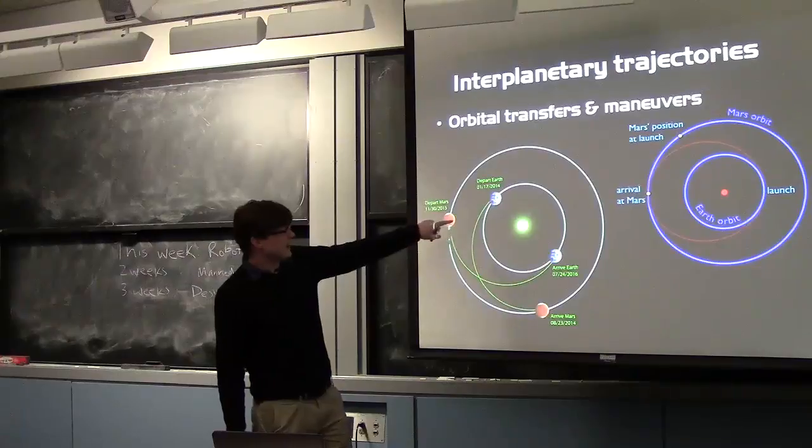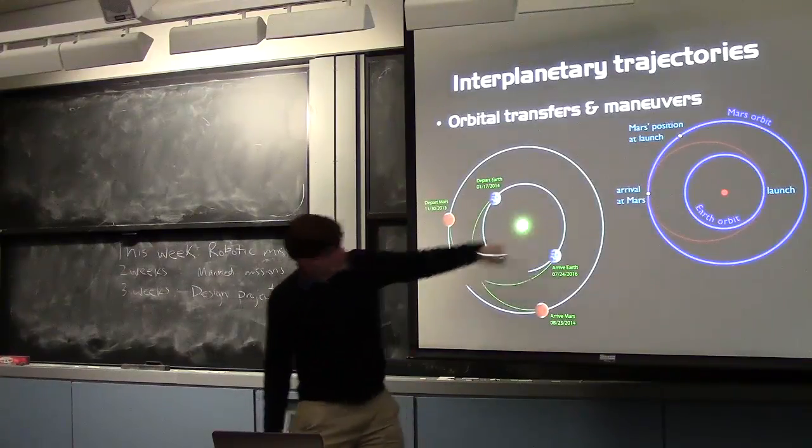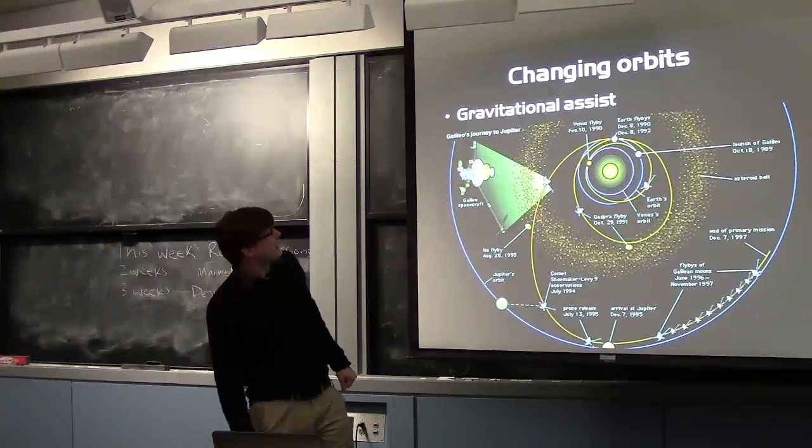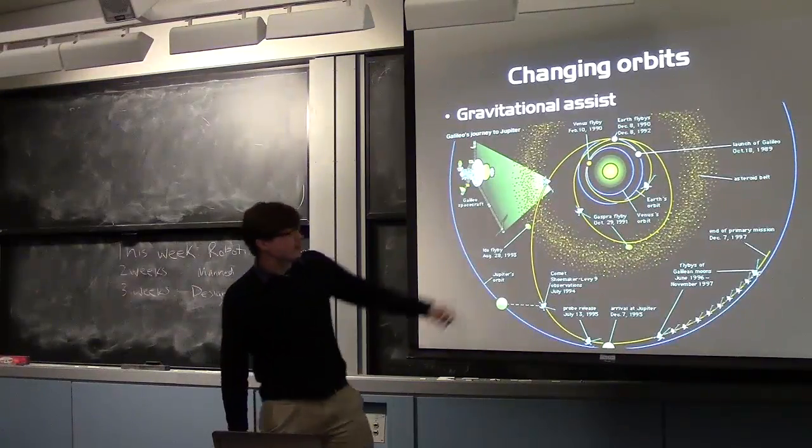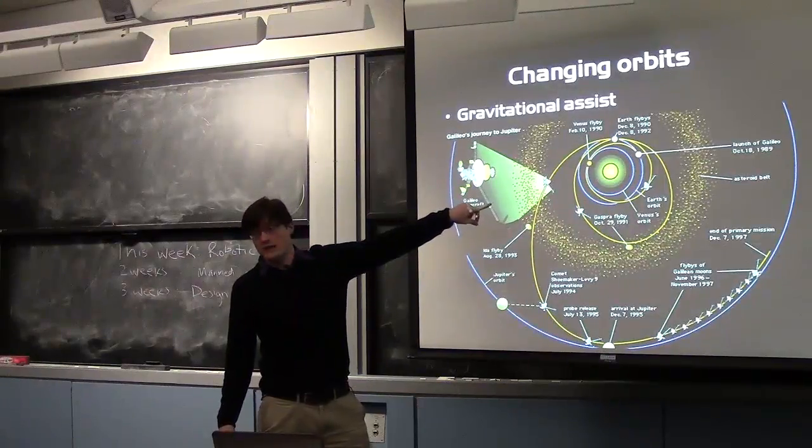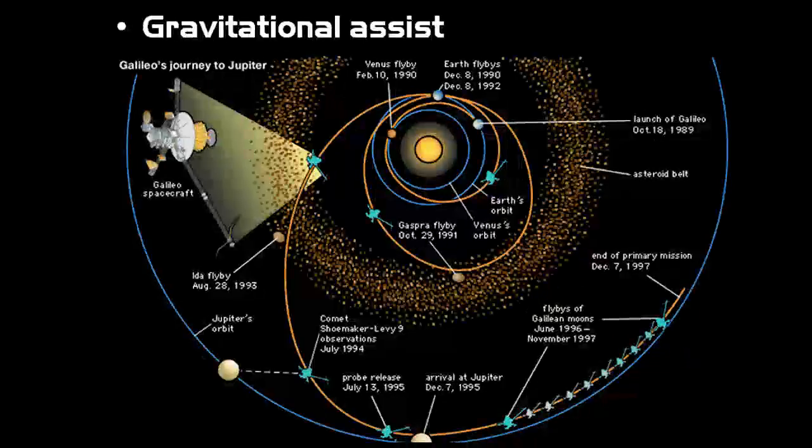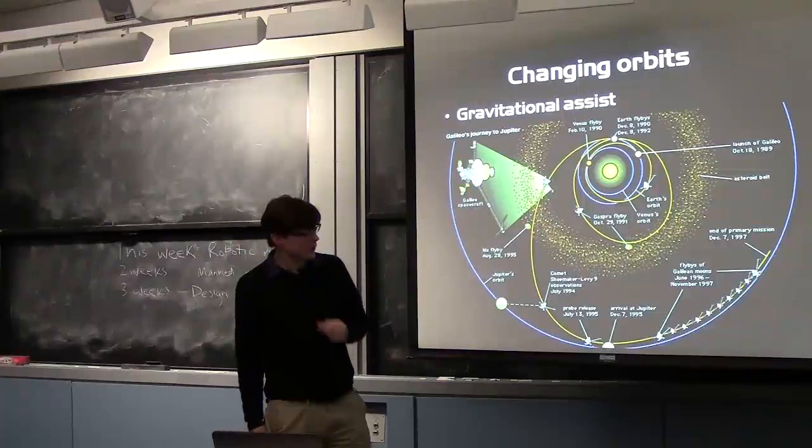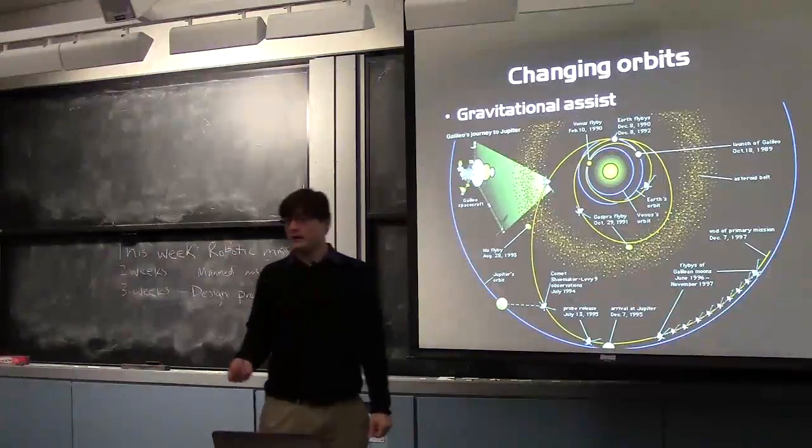So just an example of how you get to Mars. You have to change into Mars's orbit. And this is what Galileo did to get to Jupiter. Just to give an example, we launched it from Earth and then it flew by Venus to do a gravity assist to pick up energy from Venus. And then it flew by Earth again to pick up more energy from Earth. And then flying by Earth, shot it out all the way to Jupiter.